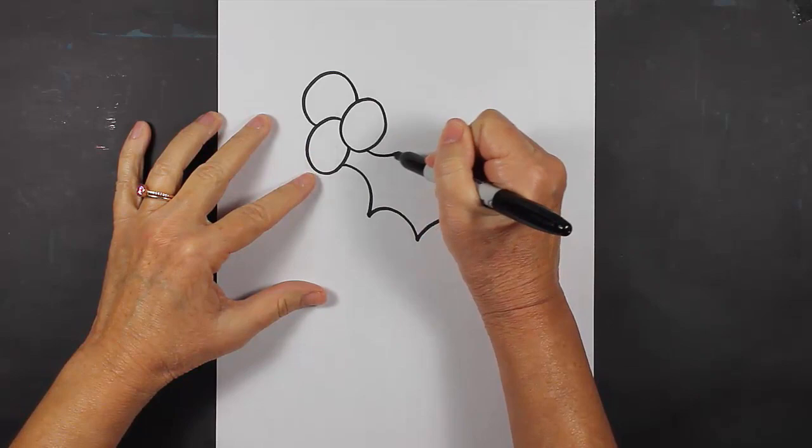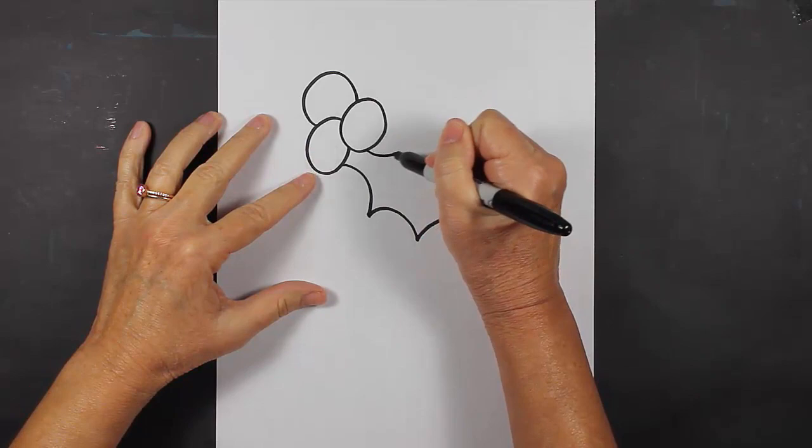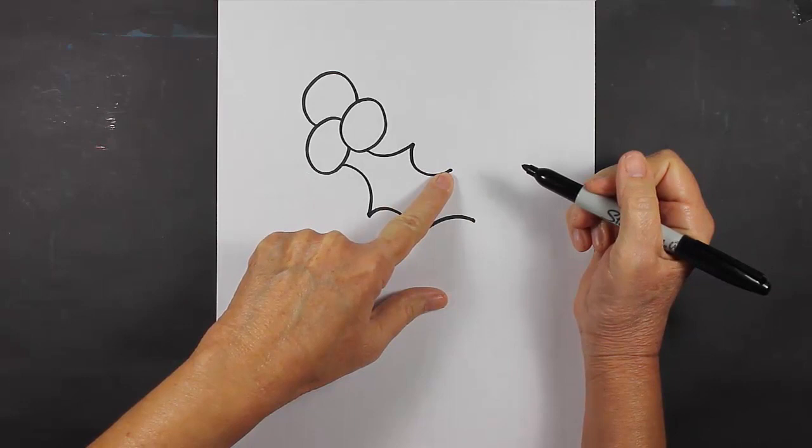Let me show you again. Curve line, curve line. Now this one's really important because this curved line needs to attach this line to this line, just like that. Do you see how I did that?